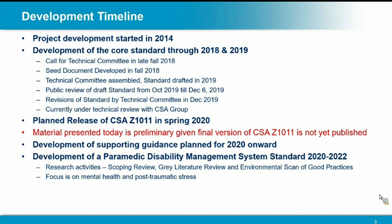The standard went out for public review in the late fall of last year, and we got feedback in December. The technical committee went through the feedback one last time to integrate any recommendations that came from that review. It's currently undergoing a technical review within the CSA itself before being released as a standard in the spring of this year. The material I'm presenting is preliminary because it's not yet published.